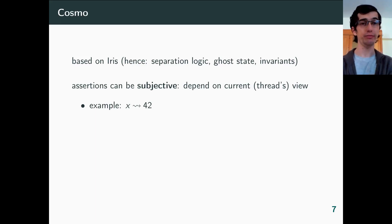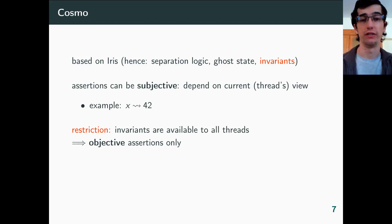A few words about COSMO. COSMO is based on IRIS, hence we inherit all of its features, separation logic and so on. Its distinctive trait is that, in general, assertions are subjective. We are reasoning under an implicit ambient view, which represents the current view of the current thread, and assertions may depend on it. For instance, x points to 42 is subjective. Maybe we see that x is storing the value of 42 because we have written it, but our write has not been propagated to other threads yet, and they still see an earlier value for x.